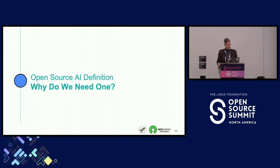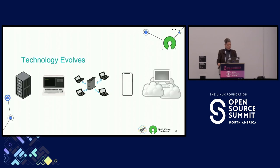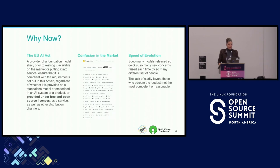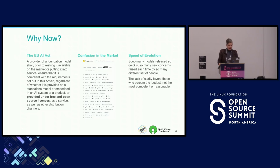My company, Do Be Good, was hired by OSI to design and implement this co-design system. Why do we need a definition? Open source was created around software; now we're wondering how open source applies to AI. Also, a hundred flowers are blooming — everyone's going their own direction defining open source AI. We have regulators such as the EU AI Act, marketplaces like Hugging Face applying so many different licenses in good faith. This lack of clarity favors those who scream loudest, not the most competent or representative.